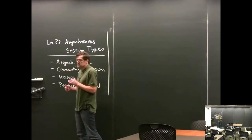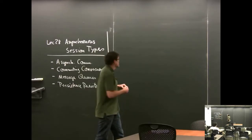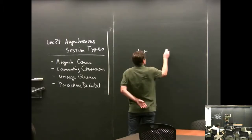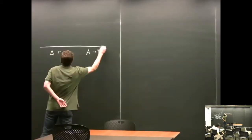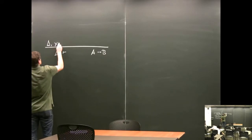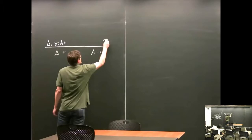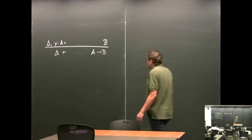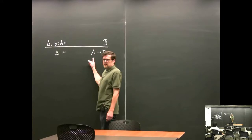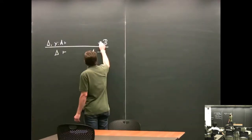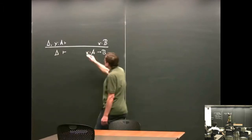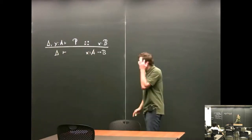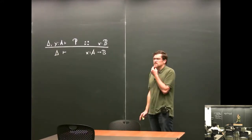Let's just do linear implication. So the right rule looks something like this: if we have delta and we prove A implies B, then we have delta, Y colon A, and we prove B. Now we just have to remember what kind of process expression was associated with that. The right-hand side was annotated with a channel which would provide a service, and then here we get some kind of process P.